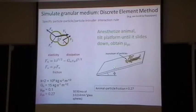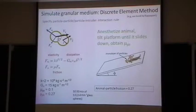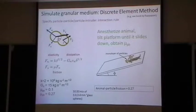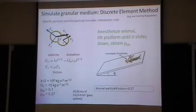To find the friction between the animal and the grain, we use a technique where we glue a monolayer of particles to a board, anesthetize the animal, and tilt the board until the animal slides down. It turns out the friction coefficient between the animal and grains is about 0.3. Some literature reports very low friction values for these animals, but that's not what we found.